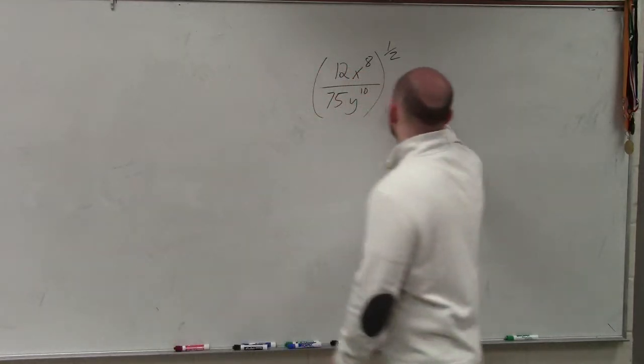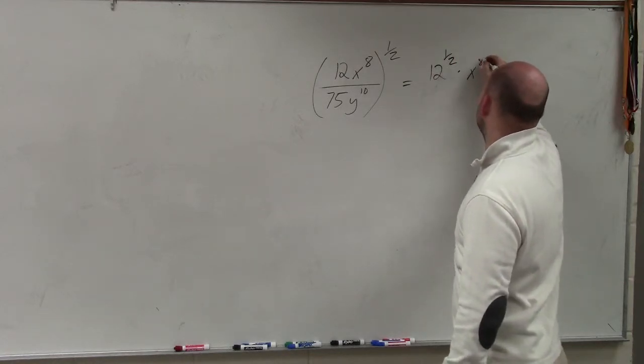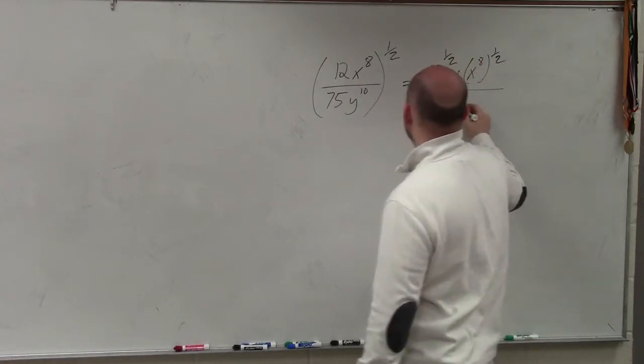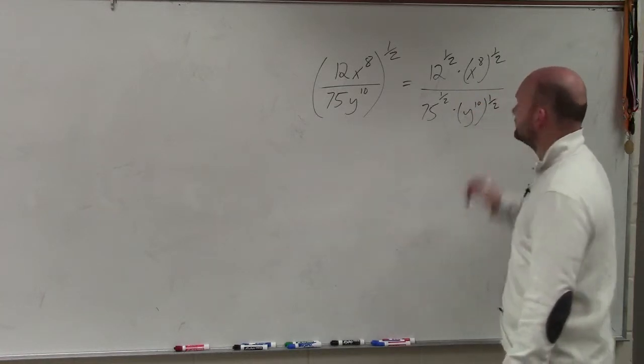So this is basically just going to look like this: 12 to the 1/2 times x to the 8th to the 1/2, all over 75 to the 1/2 times y to the 10th to the 1/2.